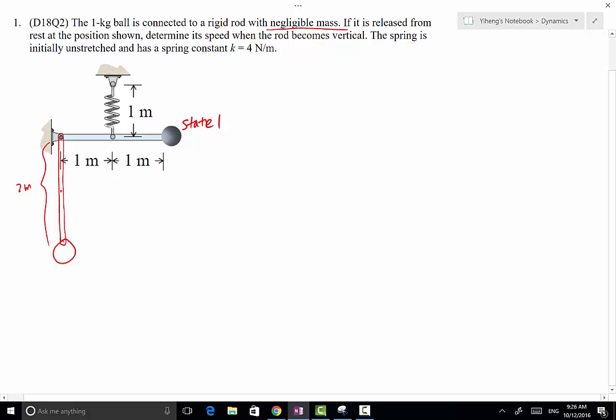And because the spring is connected to the center of this rod, therefore this will be just basically a sketch of the spring. So this is our state 2, and we need to determine the speed of the ball at state 2.